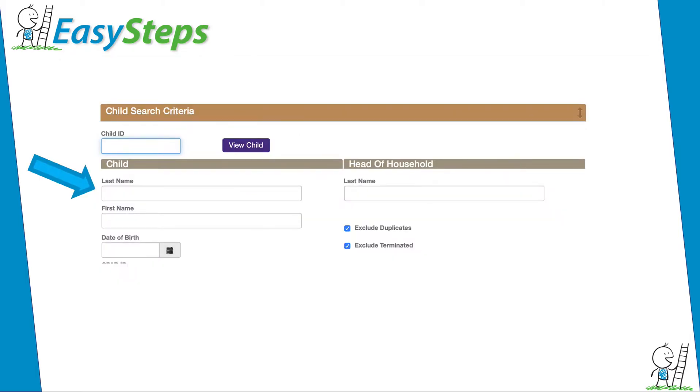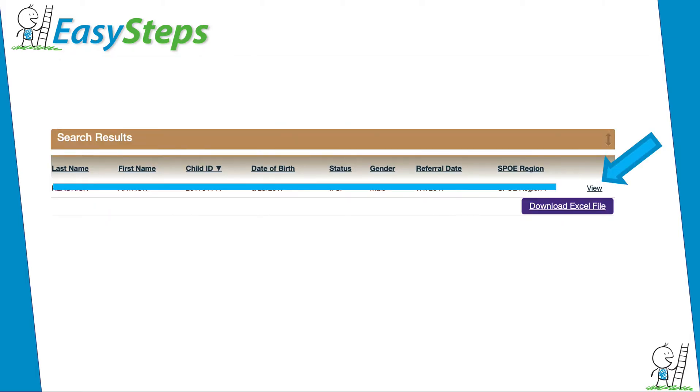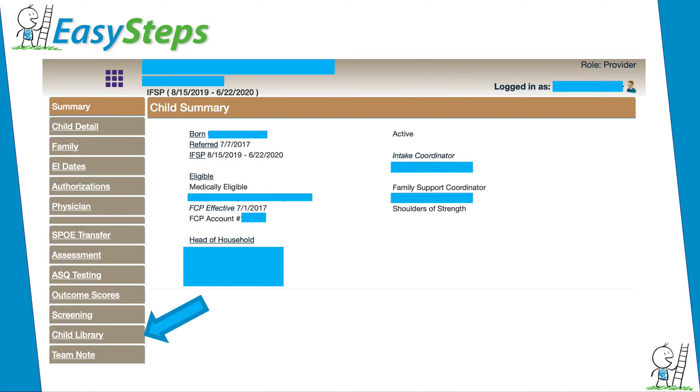From the home screen, search the child's last name. Click View. Next, select Child Library.